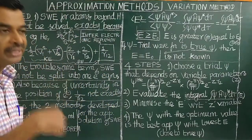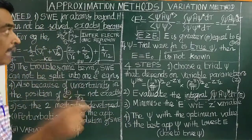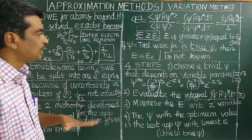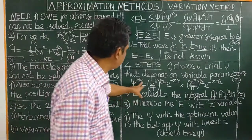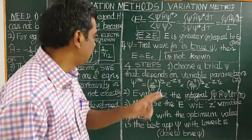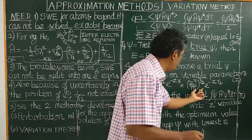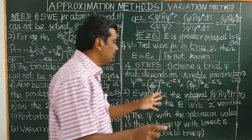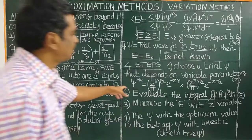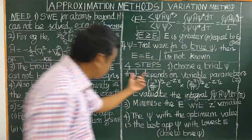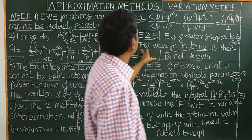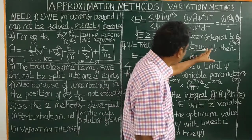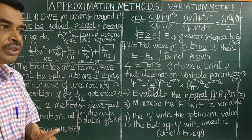For the hydrogen atom, the exact wave function is known and has been derived mathematically. However, for the helium atom, the exact wave function is not known. Instead, we use a trial wave function. For helium, the trial wave function is a product of hydrogen atom 1s orbital wave functions — this hydrogen atom 1s orbital is used as the trial wave function.